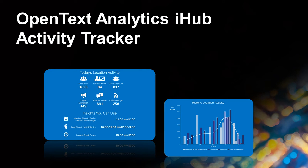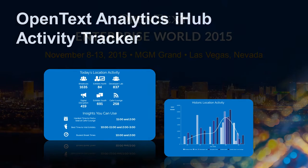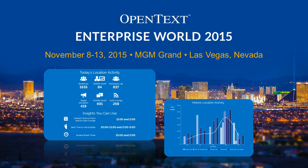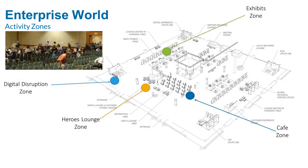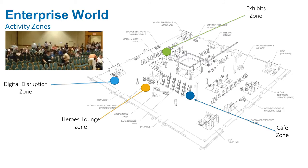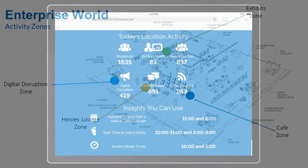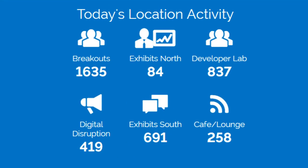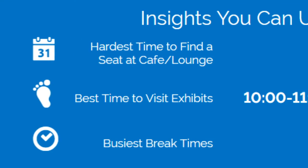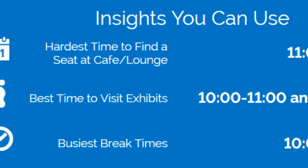OpenText Analytics introduces the Enterprise World Activity Tracker, an embedded mobile IoT application created exclusively for OpenText Enterprise World 2015. The Activity Tracker application senses and records motion events at strategic points around the Enterprise World show floor, providing a real-time data feed of attendee traffic patterns and popular areas at the show.